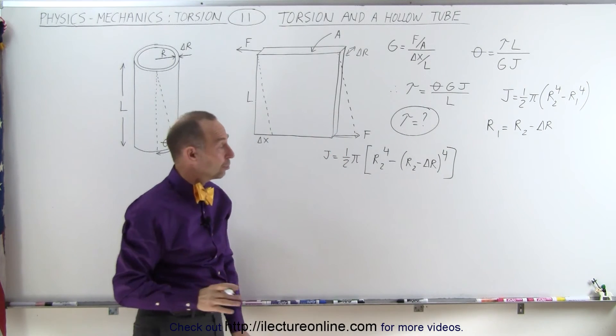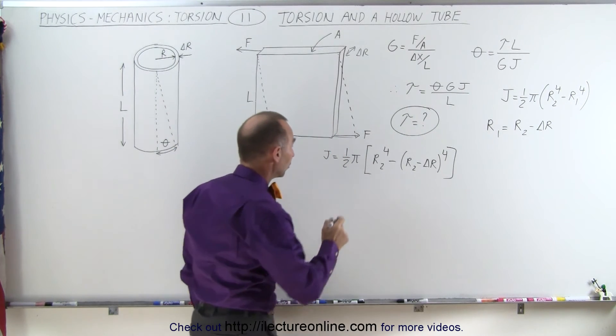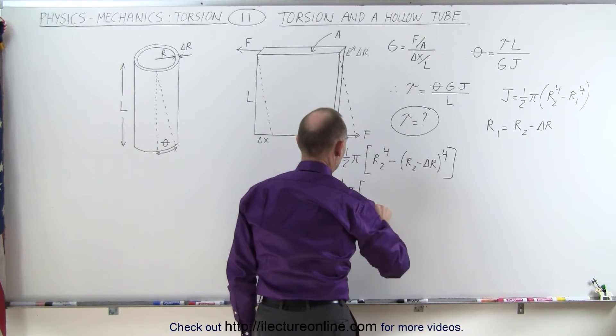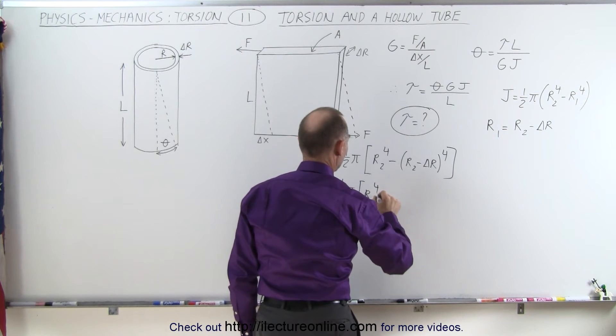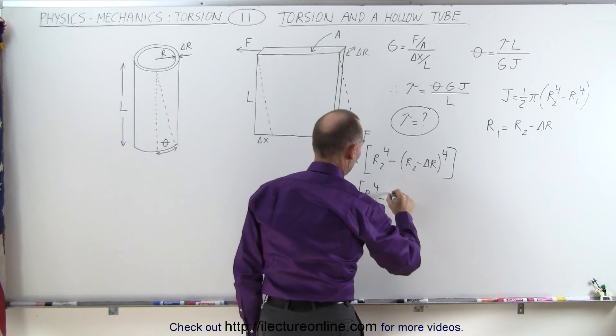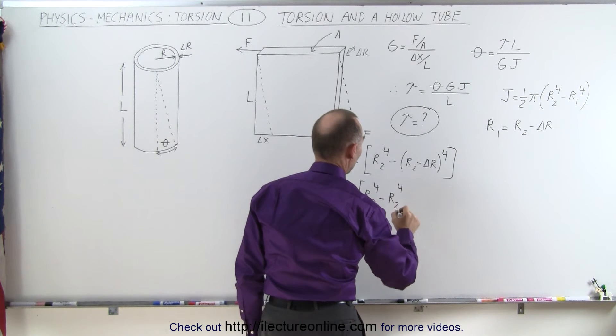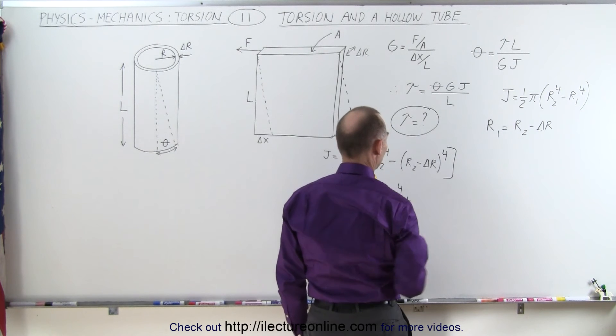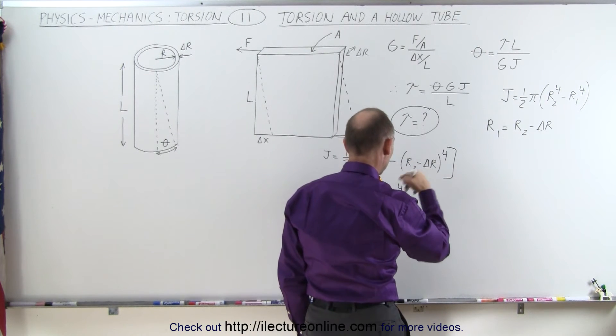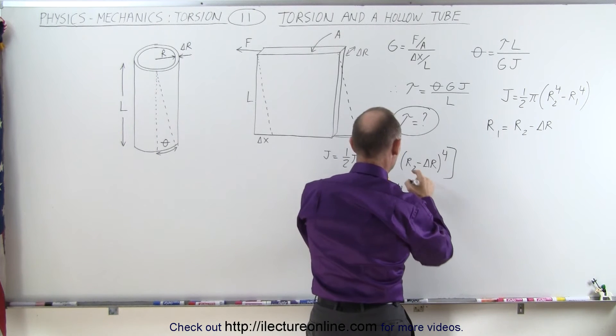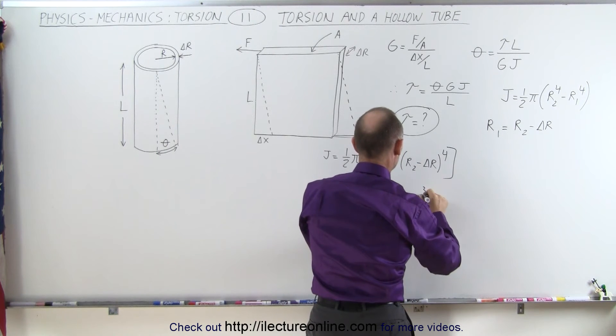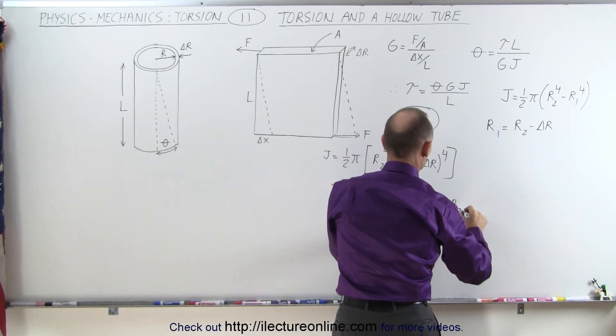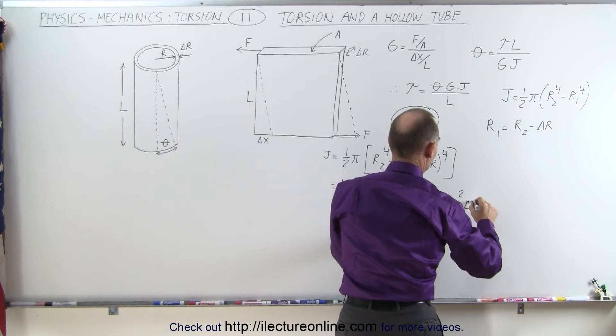Now when we expand that using binomial expansion, it'll look as follows. This is equal to one-half π times r₂ to the fourth power minus, well that will be r₂ to the fourth power. And then we'll alternate signs, it'll be plus, because it's minus times a minus, which will become plus. That will be r₂ to the third power times delta r minus r₂ to the second power times delta r.